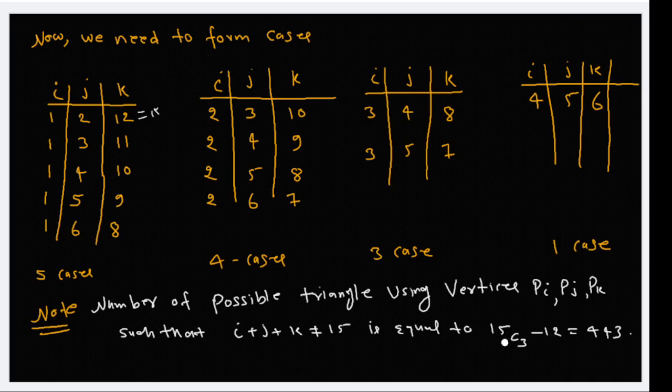How to calculate 15C3? Simply, we calculate 15 factorial upon factorial 3 and factorial 15 minus 3, which is factorial 12. So we write 15 into 14 into 13 into factorial 12 and cancel out factorial 12 to factorial 12, upon 3 into 2 into 1.